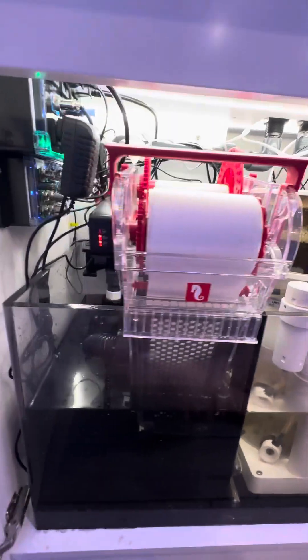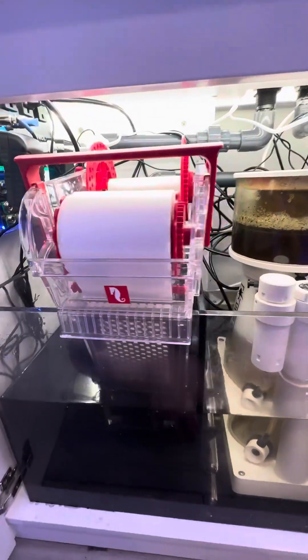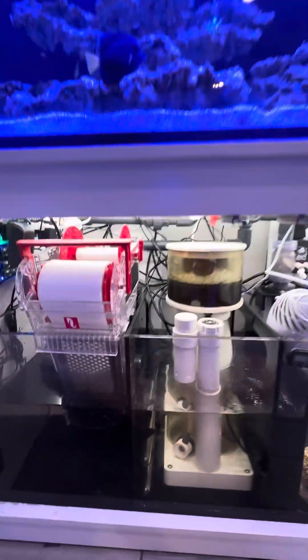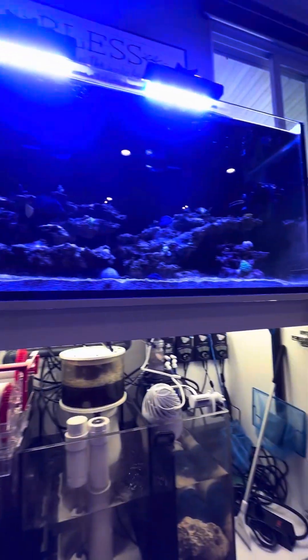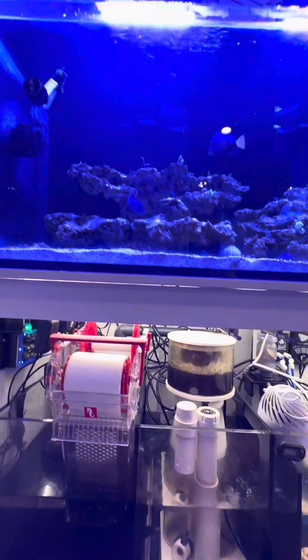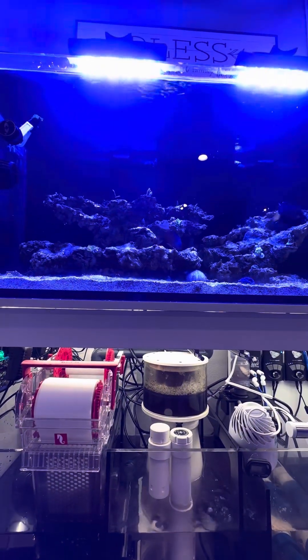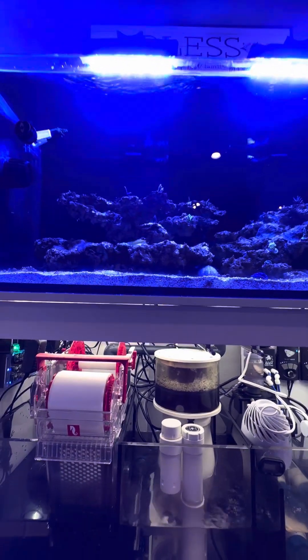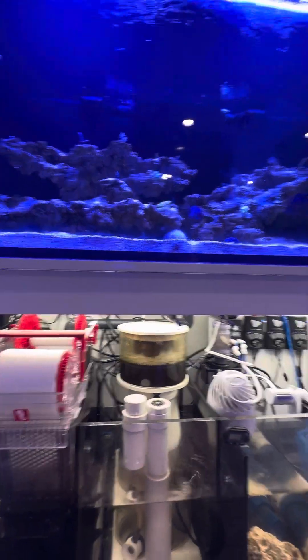Alright, so here's the Red Sea Reef Mat 500. This is an 80 gallon tank that I bought. It's 48 by 22 tall by 20 front to back, or 21 front to back.